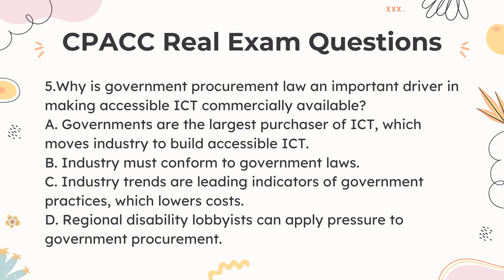5. Why is government procurement law an important driver in making accessible ICT commercially available? a. Governments are the largest purchaser of ICT, which moves industry to build accessible ICT b. Industry must conform to government laws c. Industry trends are leading indicators of government practices, which lowers costs d. Regional disability lobbyists can apply pressure to government procurement